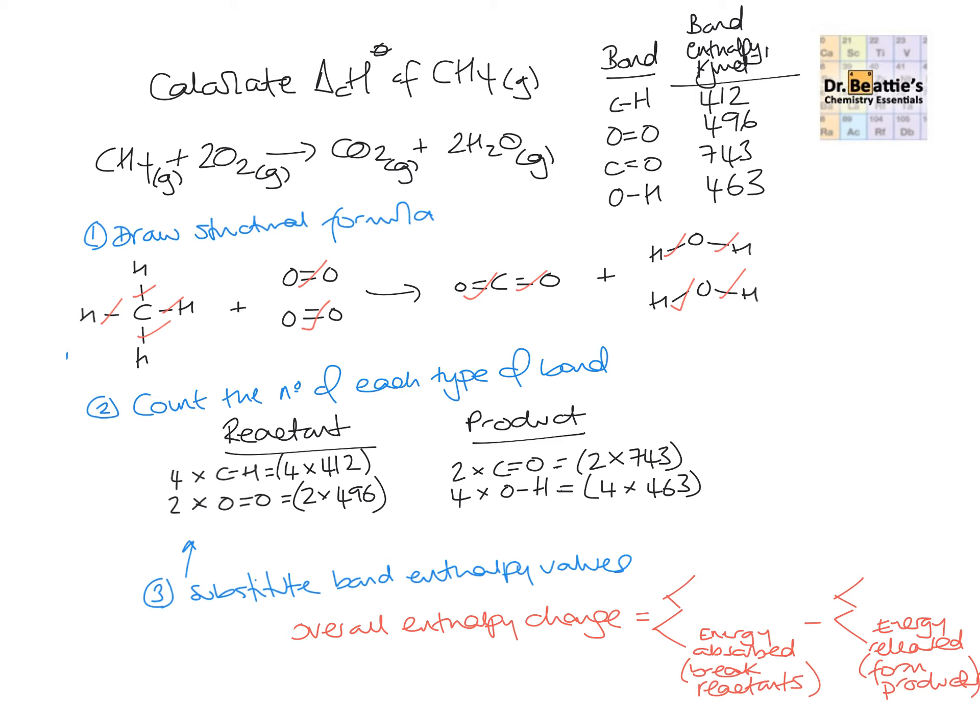Do that sum. And then we'll be given our overall enthalpy change. So the reactant column works out to be 2640. Our product column to be 3338. So then we've got reactants minus the products. And then this gives us an overall value of minus 698 kilojoules per mole. And this is sensible because all combustion reactions are exothermic. Hence the negative overall enthalpy change when we've calculated this.